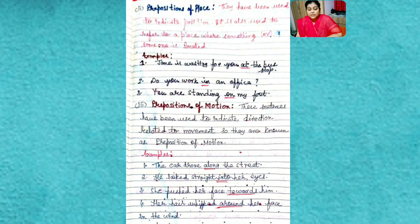These are the words which are used as prepositions showing prepositions of motion or movement. Her hair whipped around her face in the wind. So the words like 'along,' 'into,' 'towards,' 'around'—this will come under the preposition of movement or the preposition of motion.